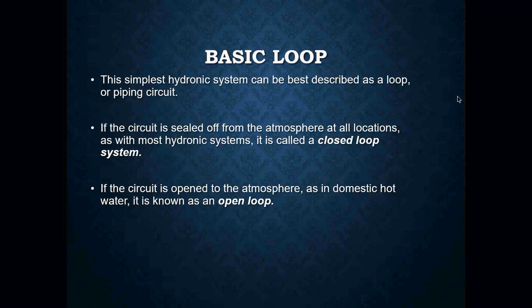A closed-loop system is a boiler being used simply to heat a building or house. If we add domestic hot water — using the boiler to also heat a water heater — that is now an open-loop system, because the system is not 100% sealed. We're using heat from the boiler to heat the hot water heater so we can deliver hot water to faucets and showers.